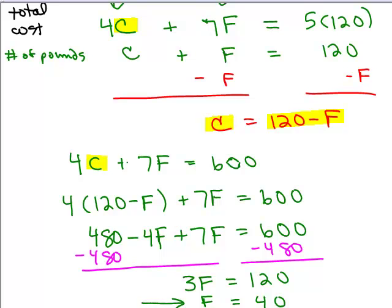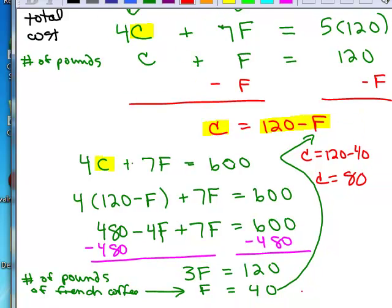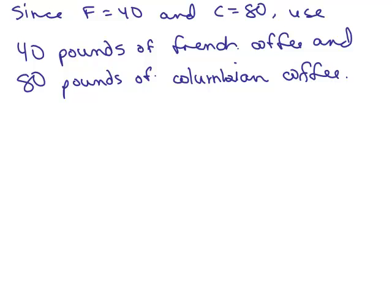What's F stand for? Number of pounds of French coffee, right? So just keep in mind that's what it stood for. Now, so we know F. How are we going to figure out C? I'm going to go back up here. Plug that in for F. So what would C equal? C would be 120 minus 40. You could see that. So C would be 80. So we got F is 40, we got C is 80 and so basically it means I want to have 80 pounds of the Colombian coffee. So we got that F equals 40, we got C is 80, so this must mean you use 40 pounds of French coffee and 80 pounds of Colombian coffee.